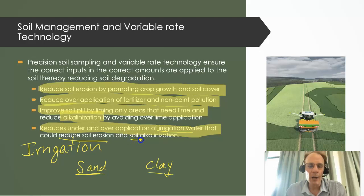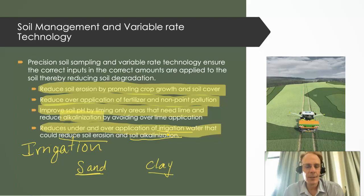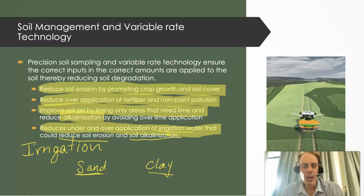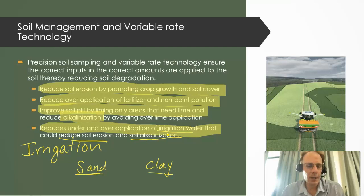Variable rate technology is the ability to vary the rate of inputs — whether pesticides, herbicides, insecticides, fertilizers, lime or other soil amendments, and irrigation water. The idea is to apply the amount needed in each location, because soils and fields are variable and change as you move across them. By matching the need of the soil with the appropriate amounts of crop inputs, we can reduce soil degradation, improve soil management, and improve soil health. This concludes video lecture number three on variable rate technology and nutrient management.